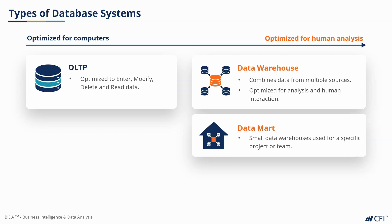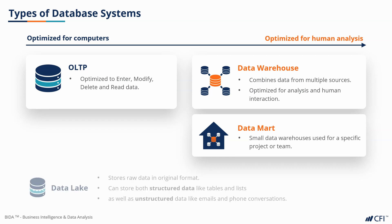The last type of storage you should know about is a data lake, which stores raw data in its original format. It can store both structured data, like tables and lists, as well as unstructured data, like emails and phone conversations. Since the data warehouse is the one we'll be working with most often in BI, we're going to cover that one in a little more detail in the next video.